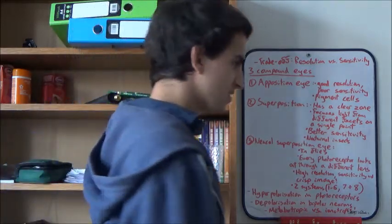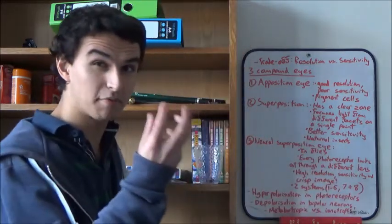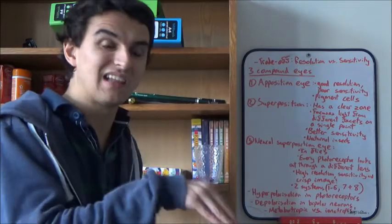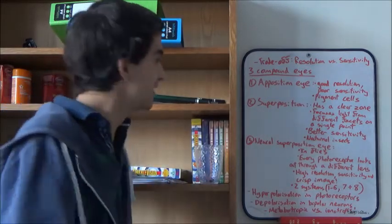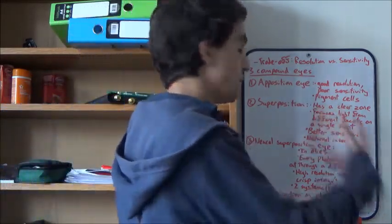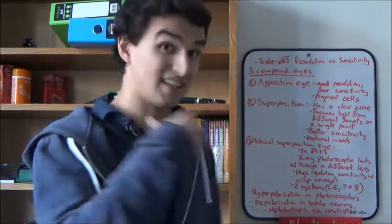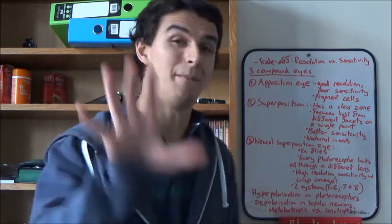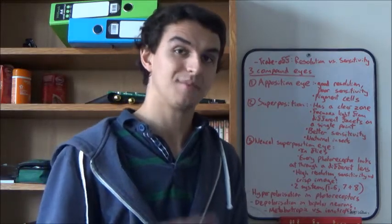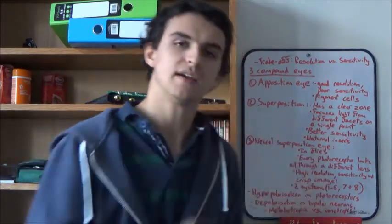But because these ommatidia are pretty small, not much light can enter each one. So that means as a result they have a poor sensitivity. So that's it. The apposition compound eye has pretty good resolution but bad sensitivity, but it does give a pretty crisp image.